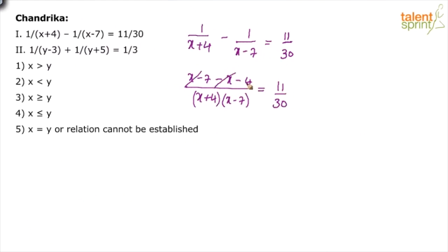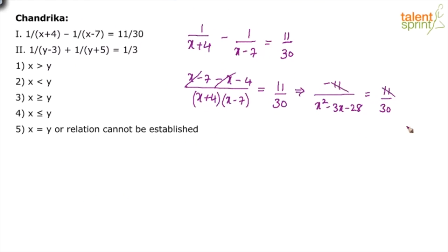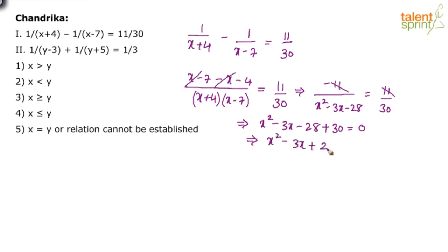So we have minus 11 divided by (x+4)(x-7) equals 11/30. Expanding the denominator: x squared minus 7x plus 4x minus 28, which is x squared minus 3x minus 28. The 11 cancels. Cross-multiplying: x squared minus 3x minus 28 plus 30 equals 0, giving us x squared minus 3x plus 2 equals 0.